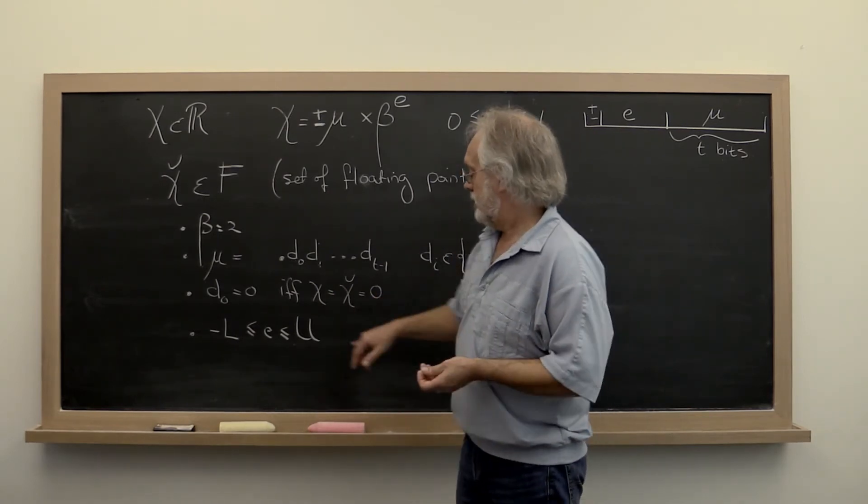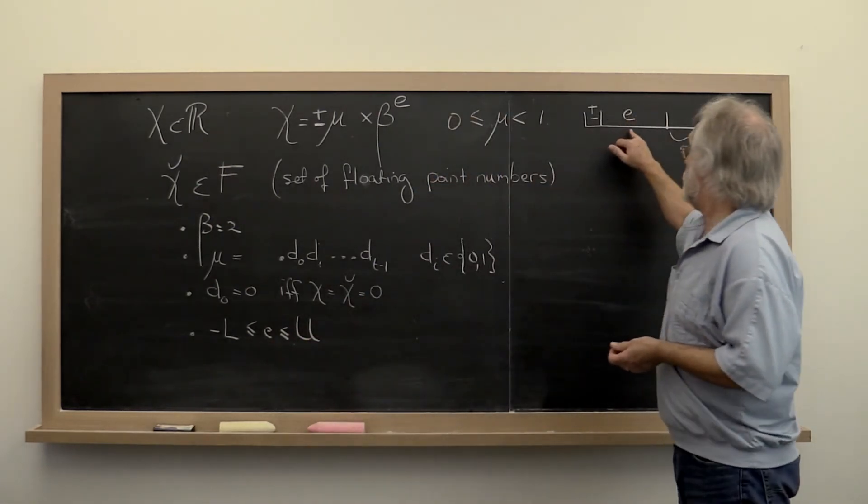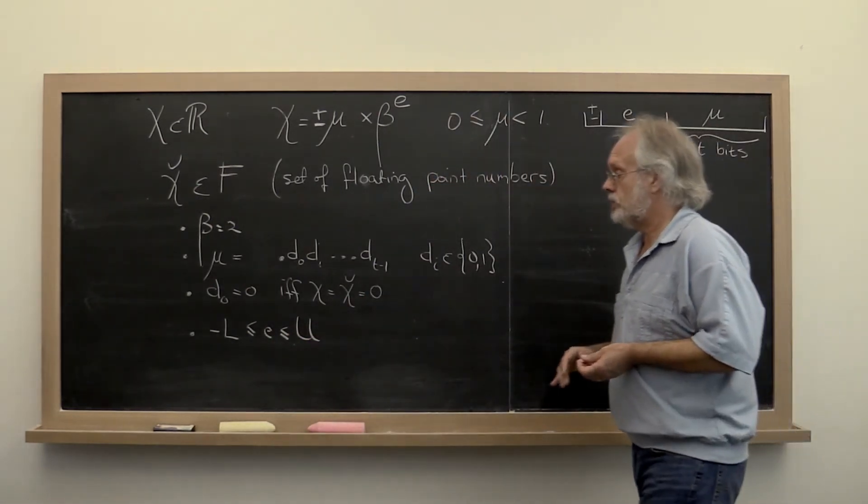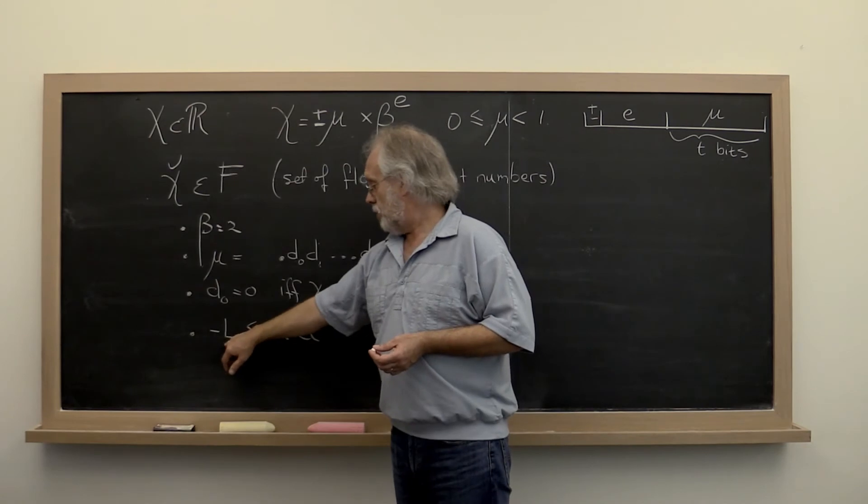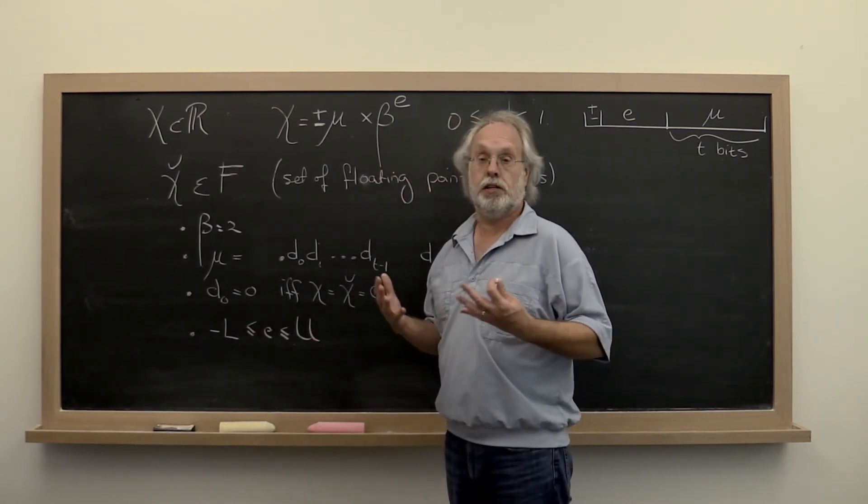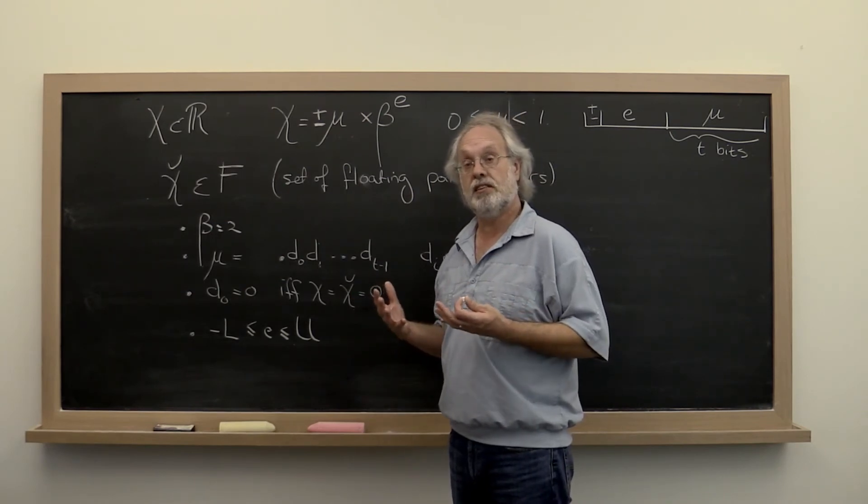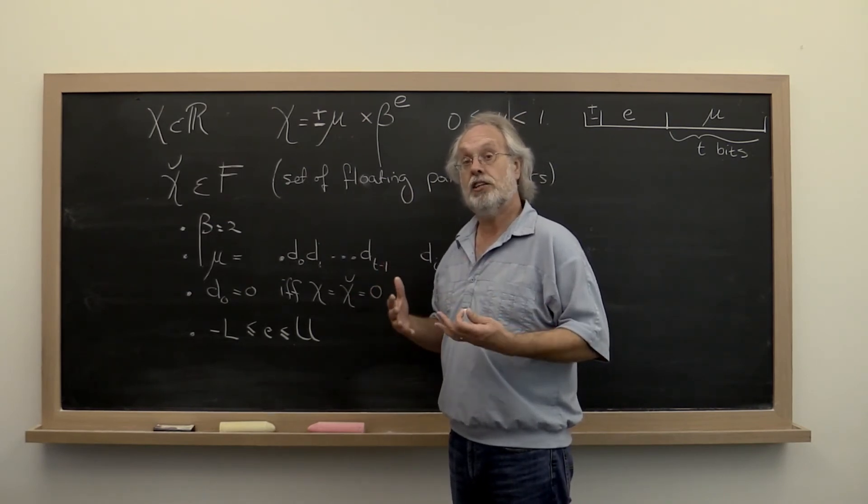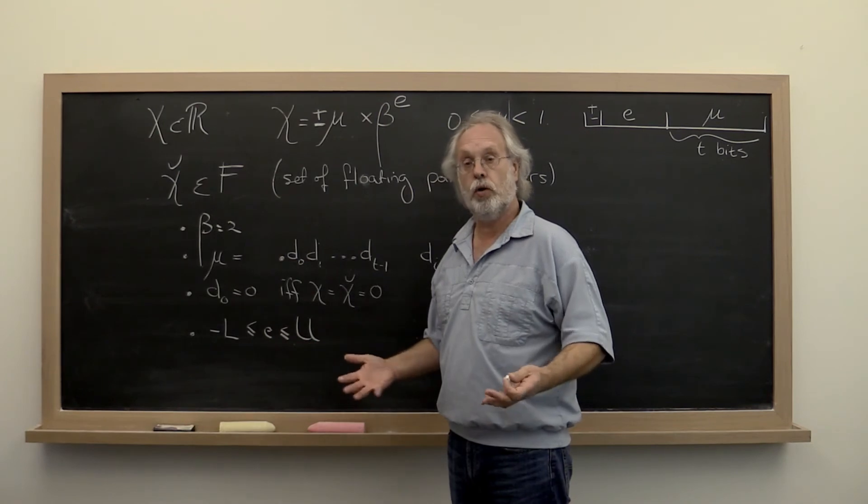And finally, because we have a finite number of bits to store the exponent, there is a smallest exponent that we can store and there is a largest exponent that we can store. And what that means is that there are numbers that in magnitude are too large to store. We call it overflow.